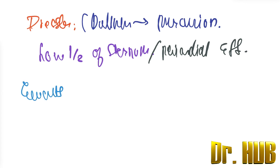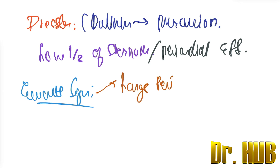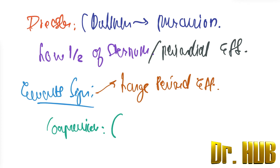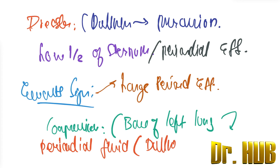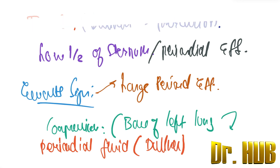Next is the Evert sign. In terms of Evert sign, it is seen in large pericardial effusion. There is compression of the base of the left lung by the pericardial fluid, which produces dullness.